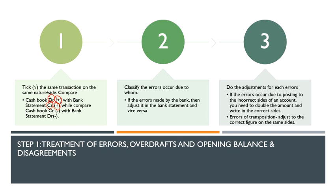After you have done that, you need to classify the errors according to who caused them. In the first sub-step you don't need to look at additional information yet — you directly look at the bank statement and bank account and take the matching ones. What doesn't match, you can't take. After that, you go look at the additional information. In the additional information, it will state who made the errors. Errors can be made by the bank or by the business.